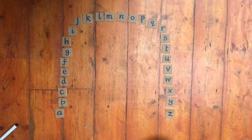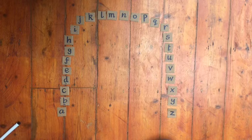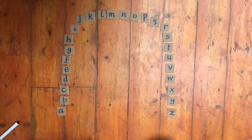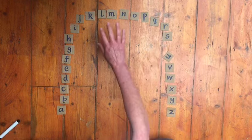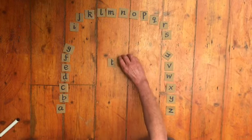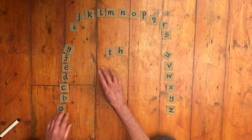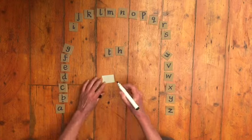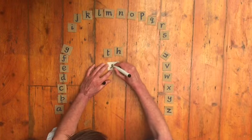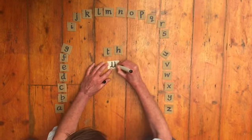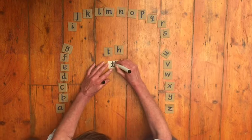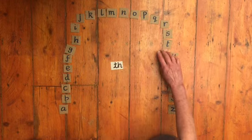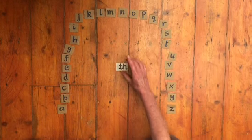Today, we're going to focus on the TH sound. We need two letters for this sound: the letter T and the letter H. I've got another piece of card here and I'm going to write on it. There we go — that's my H, that's my T. OK, we're ready to start.